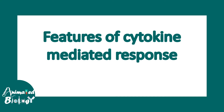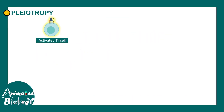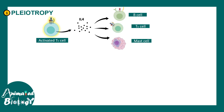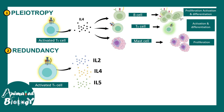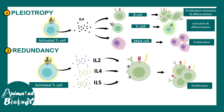Cytokines can show pleiotropy — one cytokine can perform many functions. For example, IL-4 can act on B cells, cytotoxic T cells, and mast cells, leading to different biological responses such as mast cell proliferation and B cell activation and differentiation. There can also be redundancy, where different cytokines act on the same cell and lead to a common function, like B cell proliferation — many cytokines, one common function.